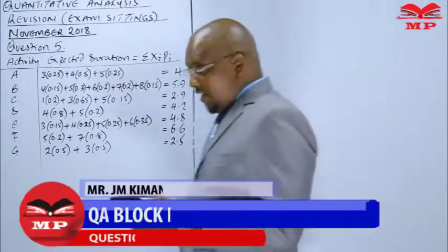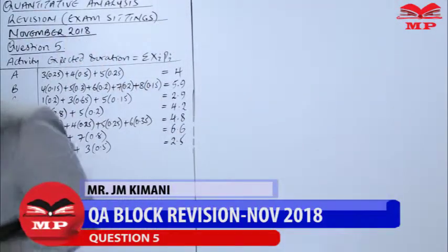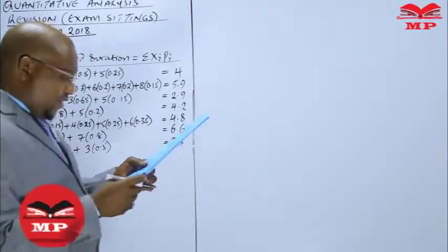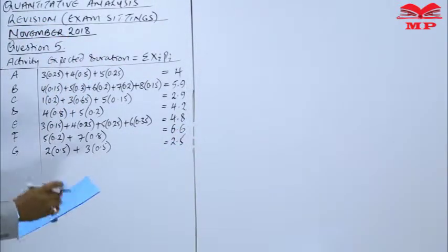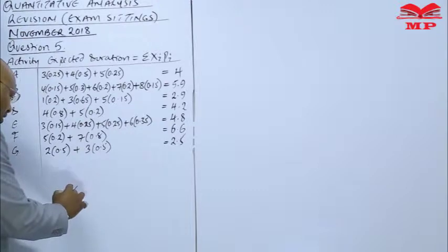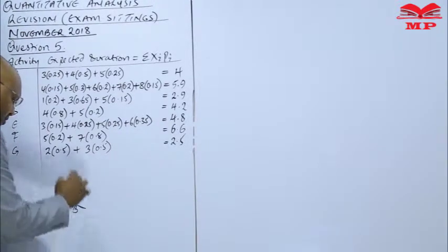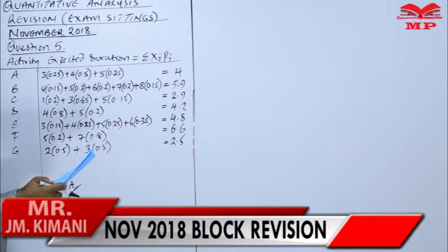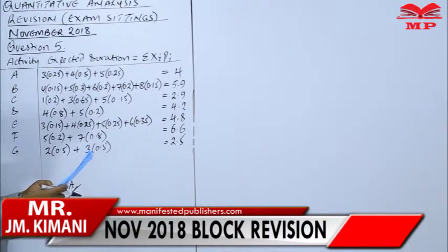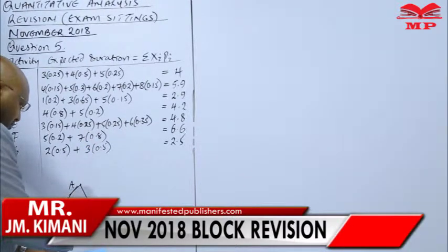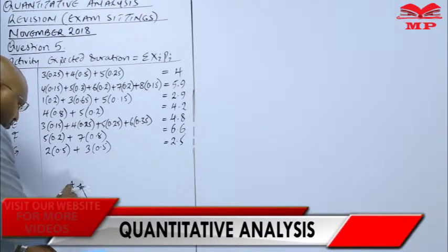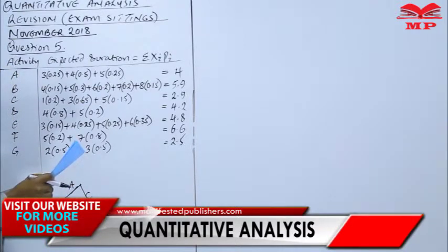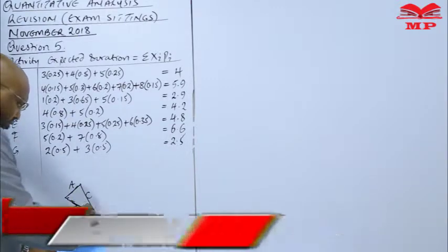So with that now we have the duration that we can proceed to the diagram. Roman 1, when you are asked now network diagram, let's have a sketch here. So A and B are the ones starting the project. This is A, this is B. Then we have activity C coming from A, meeting with B, that is to give us D.